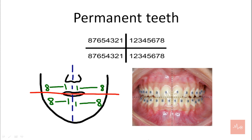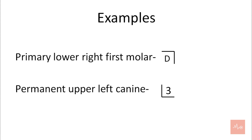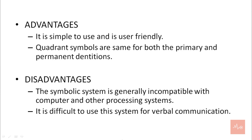Moving on to certain examples. The primary lower right first molar is represented with an alphabet because it's a primary tooth — it's D, and this sign represents the lower right quadrant. Next is the permanent upper left canine. The permanent teeth are represented with numbers, so this is three and this symbol is the upper left quadrant. Advantages: it is simple to use and quadrant symbols are the same for both the primary and the permanent dentition. Disadvantages: the symbolic system is generally incompatible with computer and other processing systems, and it is difficult to use the system for verbal communication.